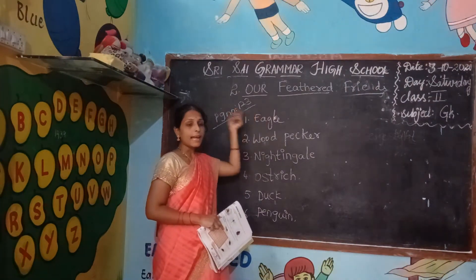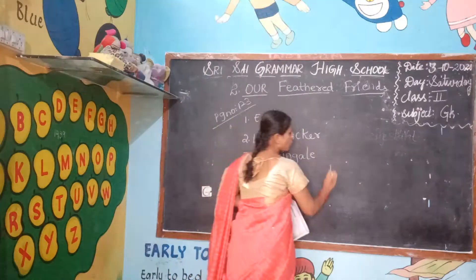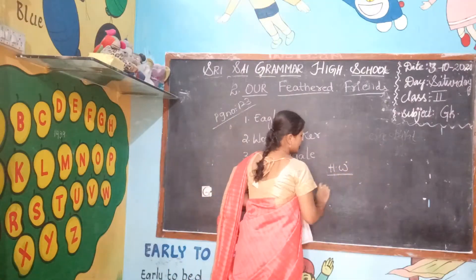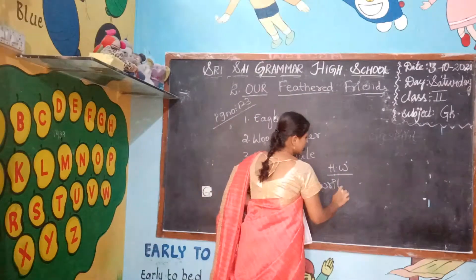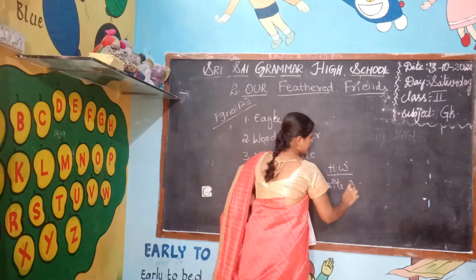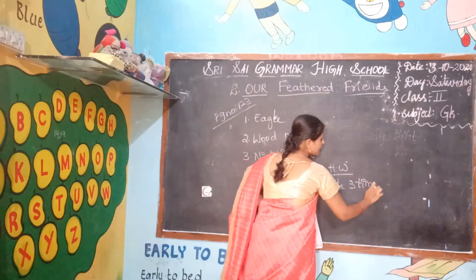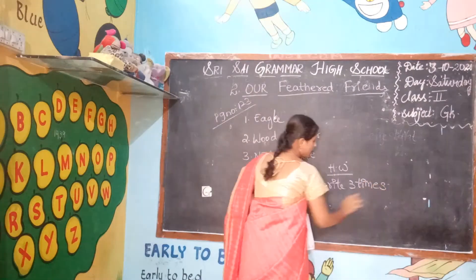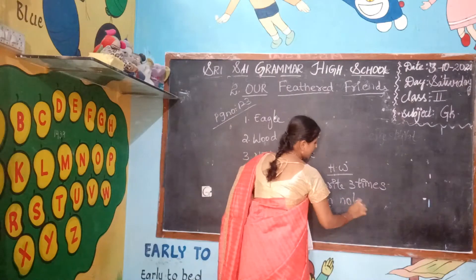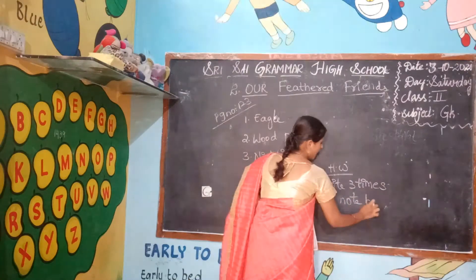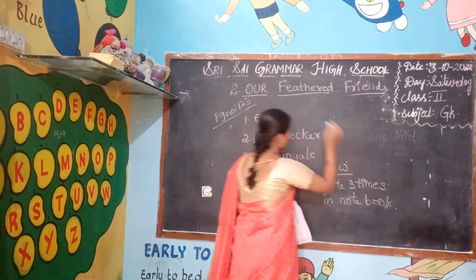Then I will write this spelling as homework. Write three times the spelling in your notebook — in your general notebook. Write Bb because we are writing Lesson A.